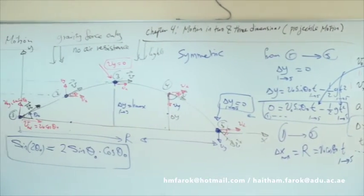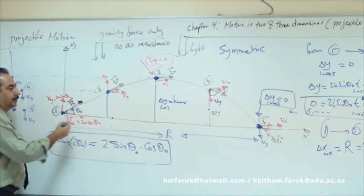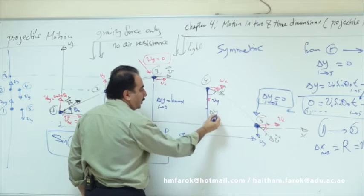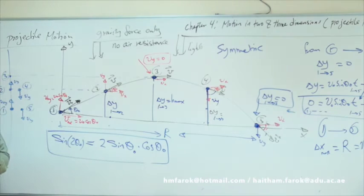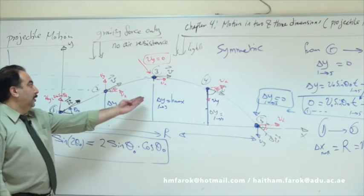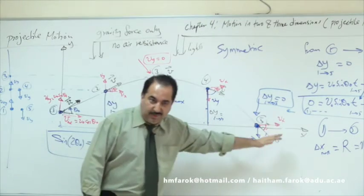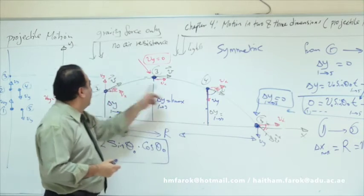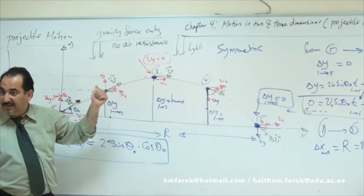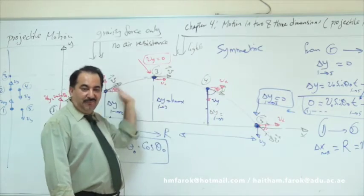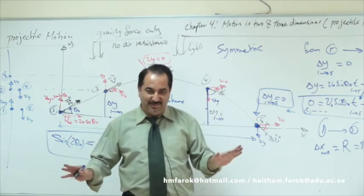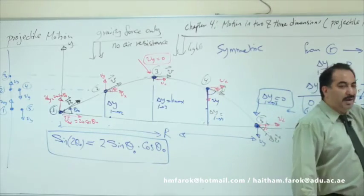ΔY at points 2 and 4 is the same value — for each ΔY value, there are two answers: one before reaching maximum height and one after. You should know both are valid. VY before the maximum is upward (positive); after the maximum, VY is downward (negative). VX is always positive and fixed — it doesn't change, because initial and final velocities in X are always equal.